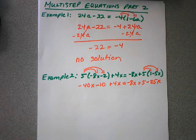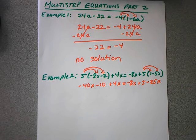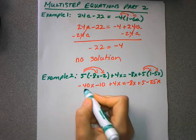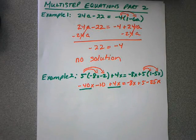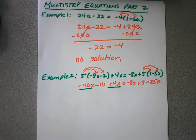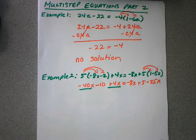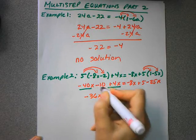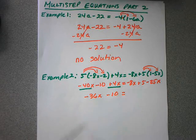Now I have a lot of terms here, so I need to start combining like terms on each side. So if we just look at the left side, we have two variable terms, negative 40x and positive 4x. We can look at this as either negative 40 plus 4 or I can do 4 minus 40. Either way, I end up with negative 36x. I still have the minus 10.